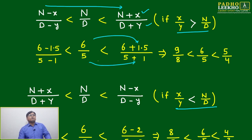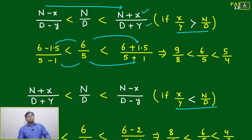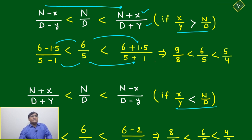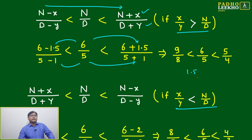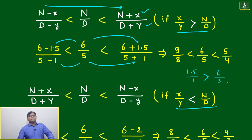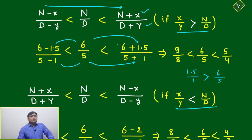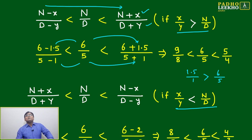If you are adding on this side — 1.5/1 — then 1.5 divided by 1 is 1.5, which is more than 6/5 which is 1.2. So 1.5 is more. If x/y is more than n/d, then the sequence will follow: 9/8 will be less than 6/5, which will be less than 5/4.